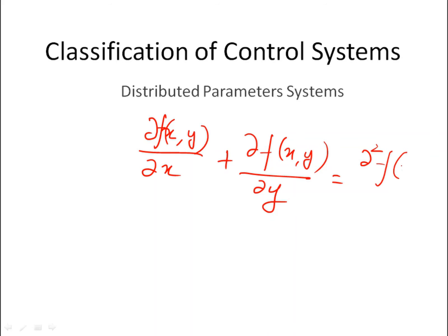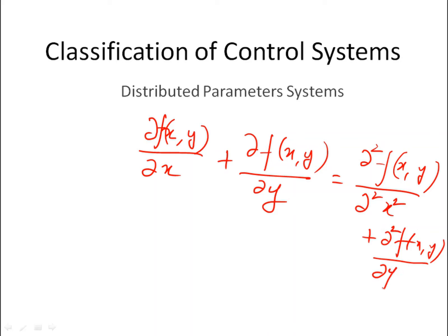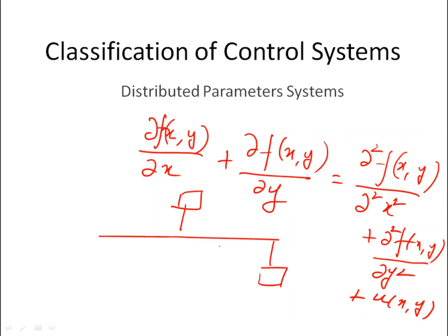Such distributed parameter systems are many times represented by partial differential equations, for example: d²f(x,y)/dx² + d²f/dy² plus some forcing function u. This reflects that the system has different control units at long distances, so the parameters cannot be combined into a single unit — it is a distributed unit system involving both distance and delay.